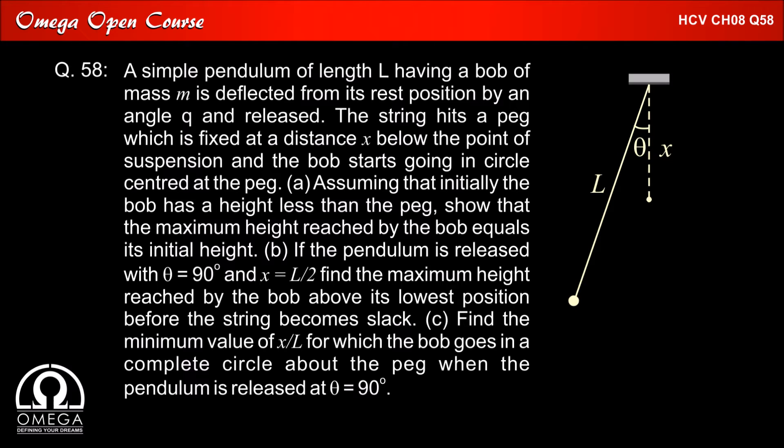Part C: Find the minimum value of x by L for which the bob goes in a complete circle about the peg when the pendulum is released from theta equal to 90 degrees.